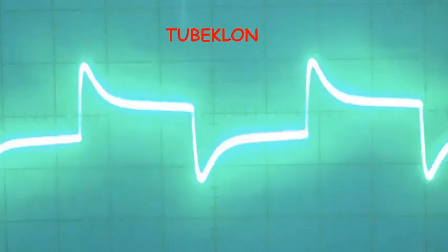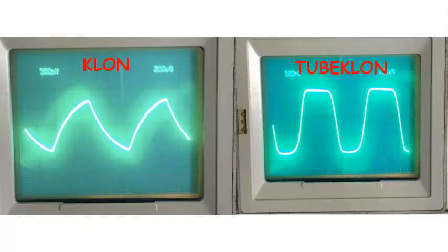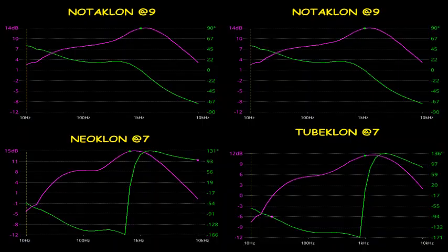Waveforms at low gain are perfect. Comparing 1 kHz sine wave inputs, clipping of the tube clon is dramatically different in that you get real tube clipping, not some shark-fin artificial interpretation. There is also quite a bit of sag for more tube-like feel and articulation. Another look at body plots and you can see just how close the clon and tube clon are.